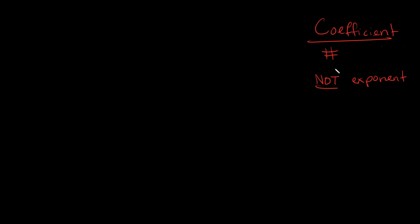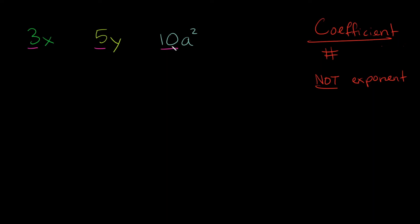So what is a coefficient? Coefficients are the big numbers that you see next to the variables — not the little numbers you see up top next to a variable. So if we have 3x, 3 is my coefficient. If I had 5y, 5 is my coefficient. If I had 10a squared, 10 is my coefficient — the big number next to the variable. Exponents are not considered coefficients; they are completely different.